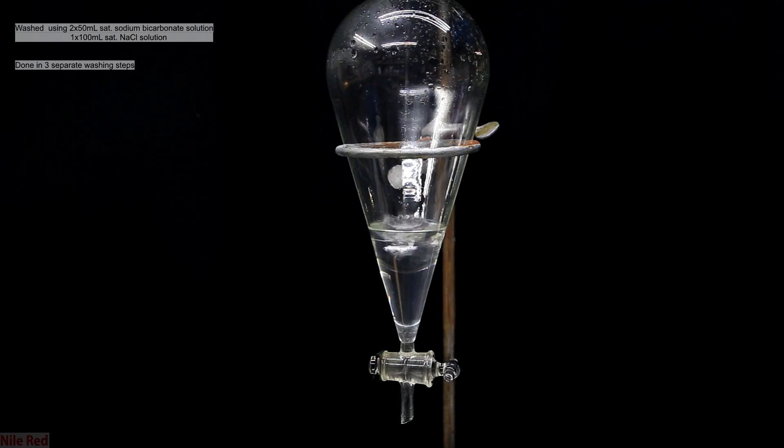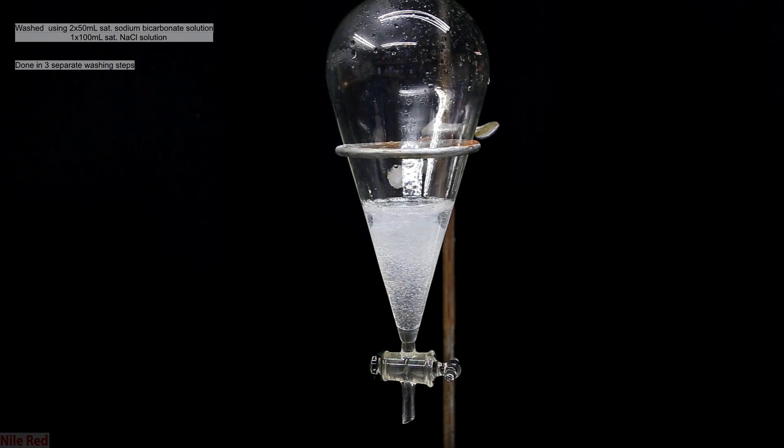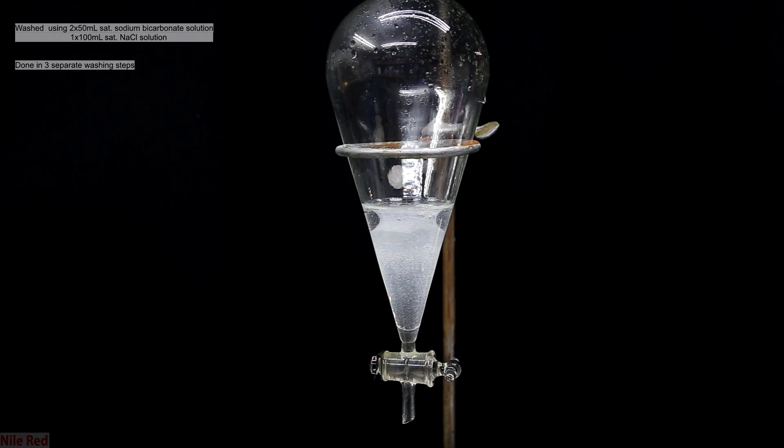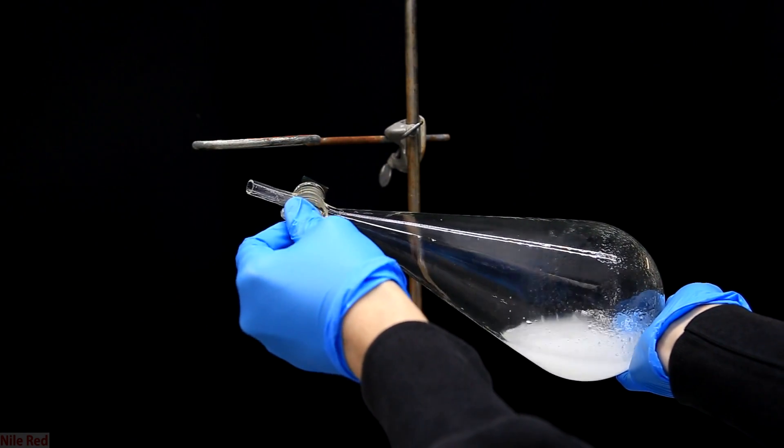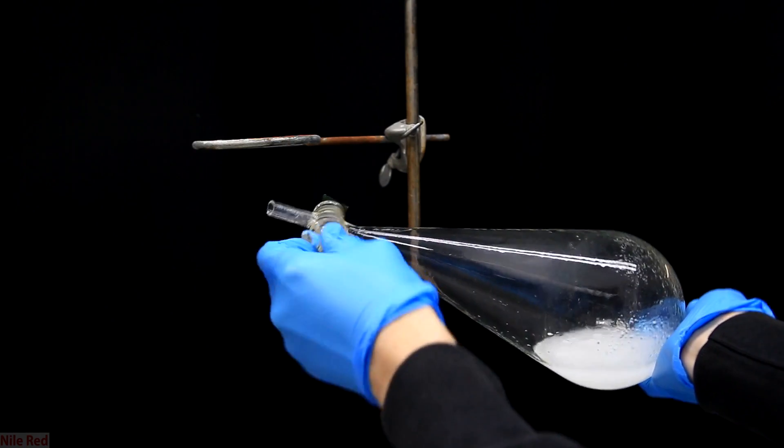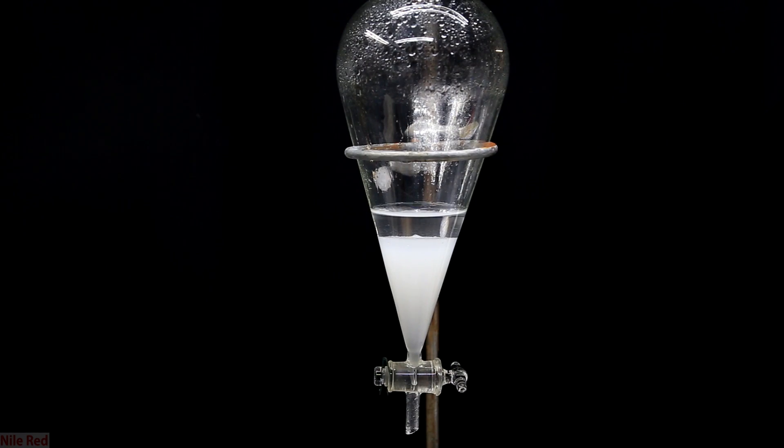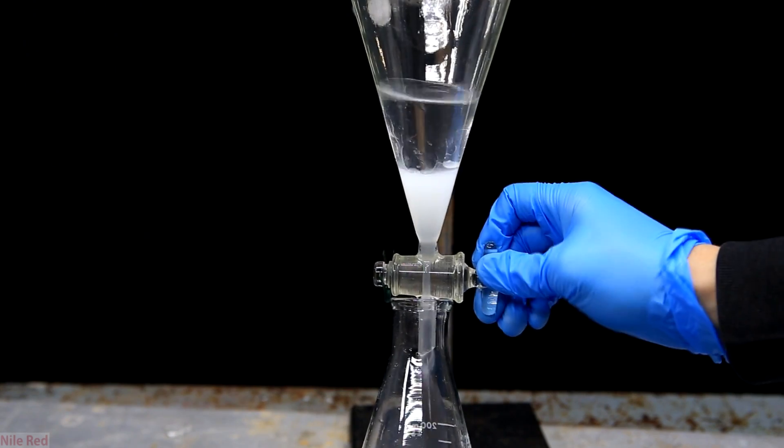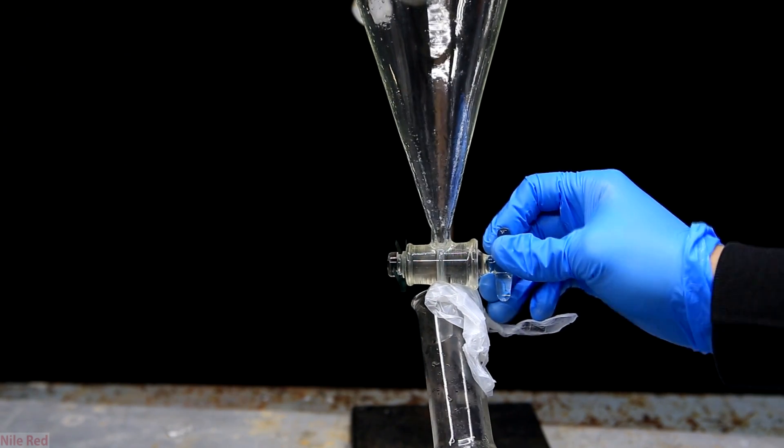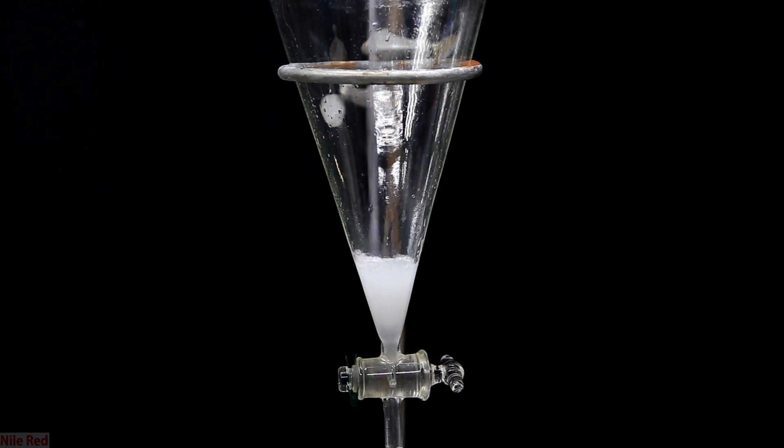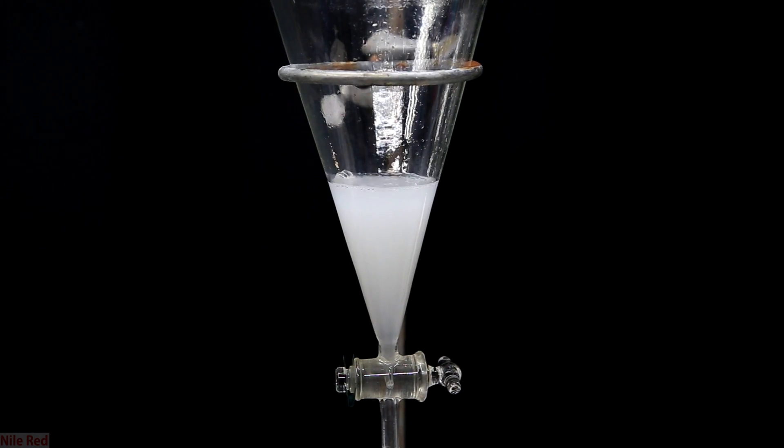We now have to clean up the benzyl chloride and to do this we start by adding 50 milliliters of saturated sodium bicarbonate solution. This will react and remove any hydrochloric acid that remains dissolved in the benzyl chloride. After the bicarbonate solution is added we cap, shake it and vent frequently. When neutralizing acid with sodium bicarbonate we produce a lot of CO2 gas so it's very important to vent frequently. Then just like before we put it back on the stand and we let the layers separate. Our bottom layer this time is actually the benzyl chloride and we drain this off. The upper layer is our sodium bicarbonate solution and we drain this off and discard it. The benzyl chloride is then poured back into the separatory funnel and we wash it again with 50 milliliters of sodium bicarbonate solution.